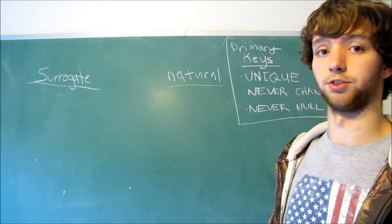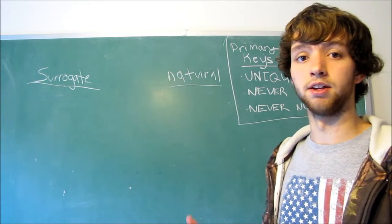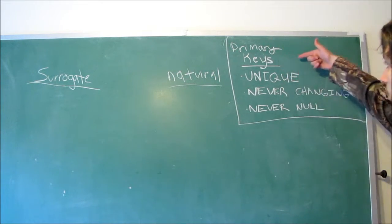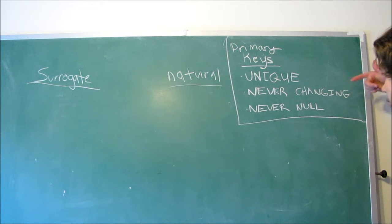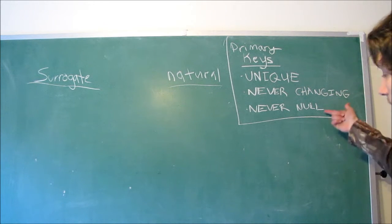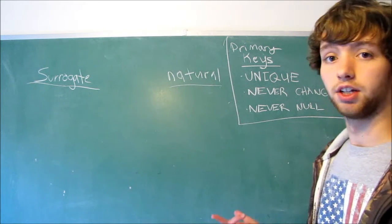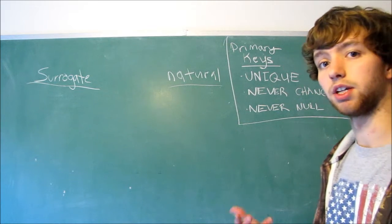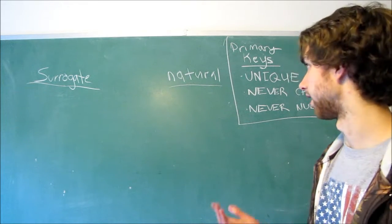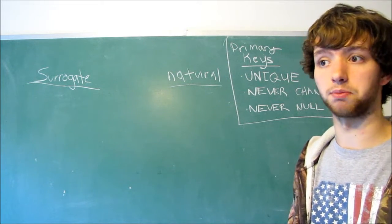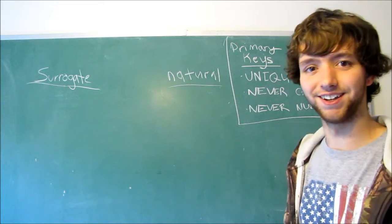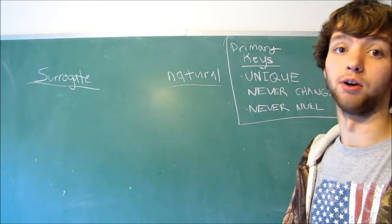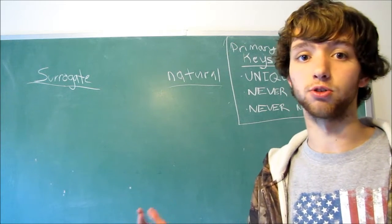So what's a downside to natural keys? Well, a downside is that sometimes you're not going to be able to find a really good natural key. Because if you look over here, we want our keys to be unique, never changing, and never empty. So if we have a natural key, we have to find one that fits all three of these, and it has to be a good one that would make sense to use as a natural key. Like, you might not want to use a combination of 20 columns to make natural key, right?